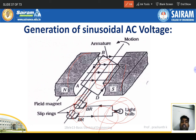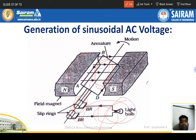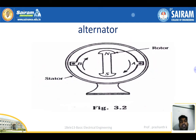Dynamically induced EMF: conductors are rotating, magnetic field is stationary — as in a generator. Statically induced EMF: conductors are stationary, field is rotating — as in a transformer. Fleming's right-hand rule: the thumb shows the motion of the conductor, the forefinger shows the magnetic field, and the middle finger shows the induced EMF.